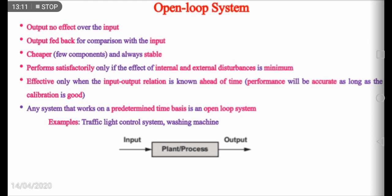Whatever mode we select in our smart washing machine available nowadays, it is an open loop system only — it works on a predetermined time basis. We don't measure the output, so the output has no effect over the input and is not fed back. Because the output is not fed back, the system is generally stable.